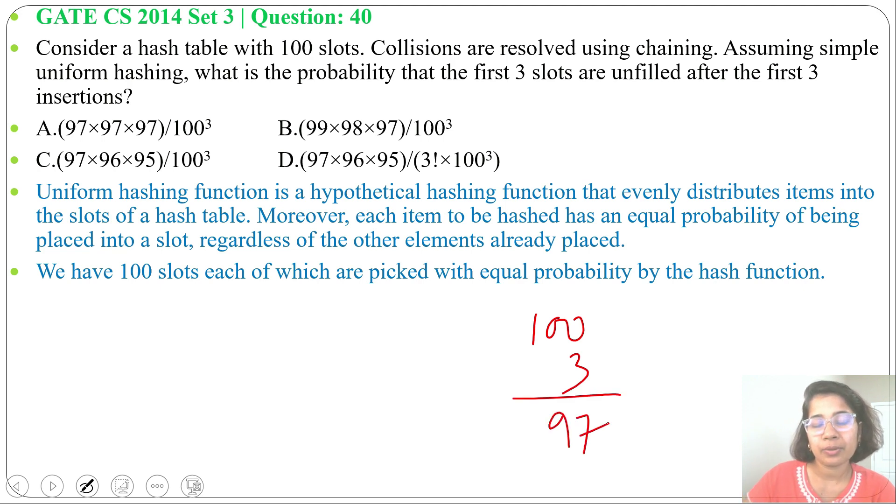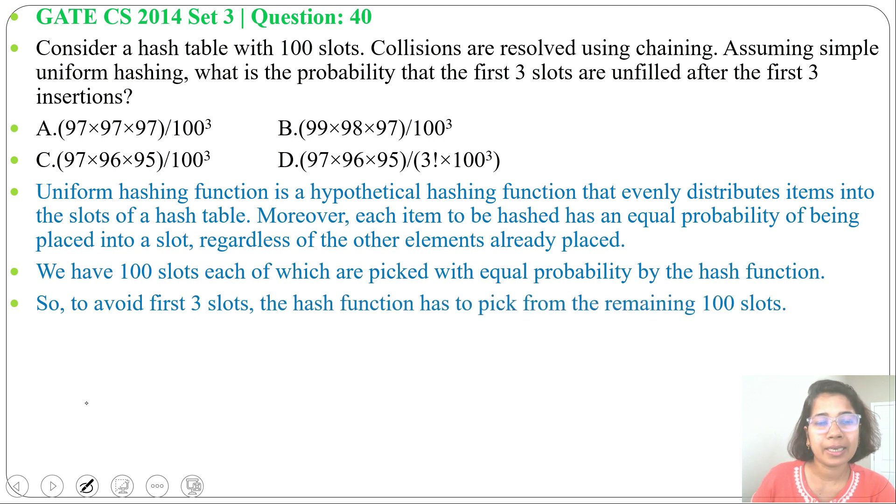The three elements will be inserted in those 97 slots. Repetition is allowed as collisions are resolved by chaining, so multiple keys can be inserted into the same slot. For first key, probability is 97/100. For second key, probability is also 97/100 as repetition is allowed. If repetition was not allowed, it would be 96/100.